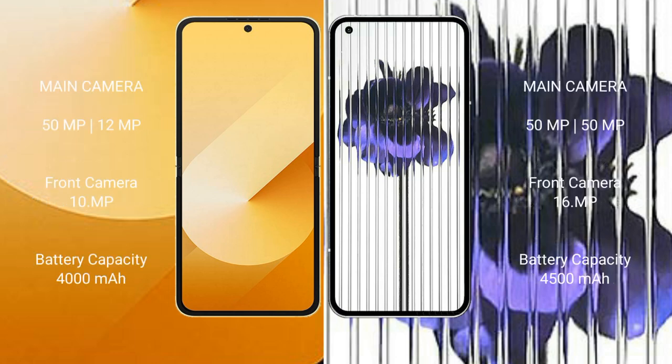Samsung Galaxy Z Flip 6 has a rear dual camera setup: 50MP plus 12MP, and a front camera of 10MP. Nothing Phone 1 also has a rear dual camera setup: 50MP plus 15MP, and a front camera of 16MP.